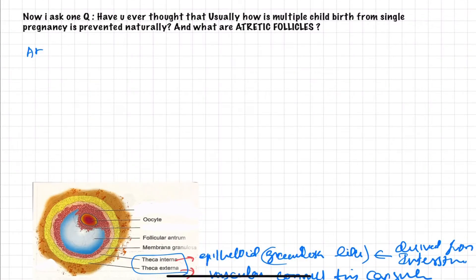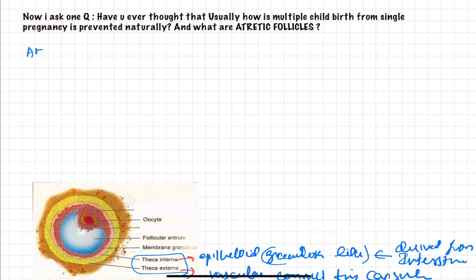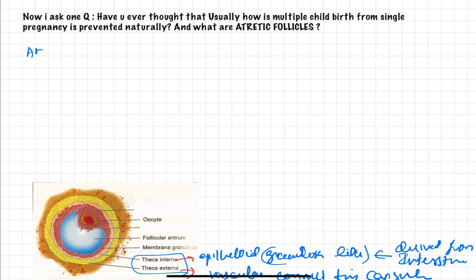Have you ever thought about how multiple child birth from a single pregnancy is usually prevented naturally? Normally, only one child is given birth, so why is multiple child birth not occurring, and what is preventing it?